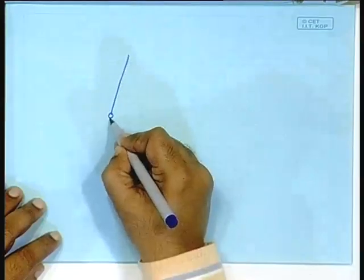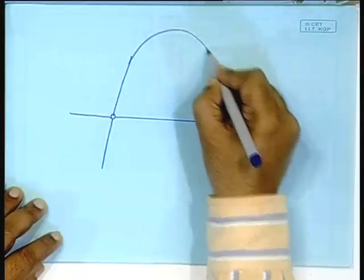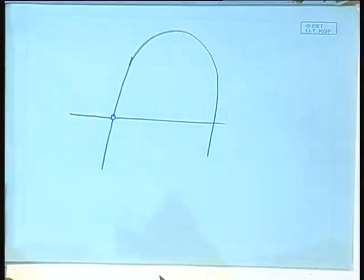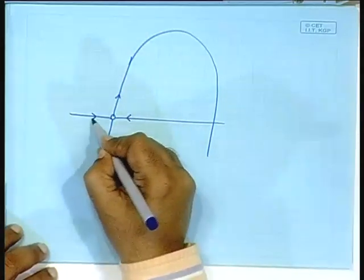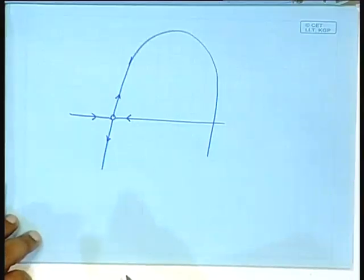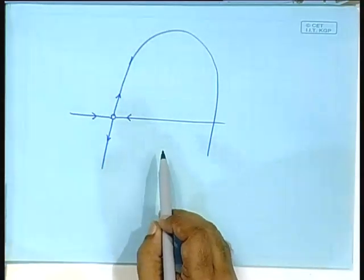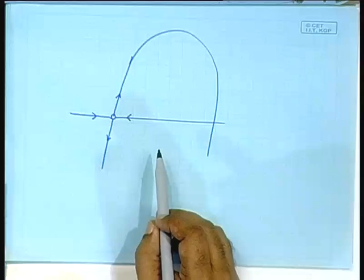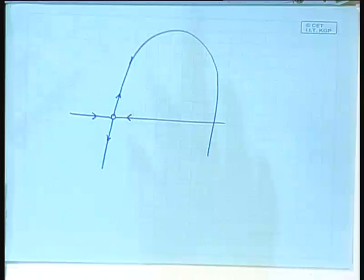But then, can this happen — can the stable and unstable manifolds cross each other? There is no concrete logic that would prevent this. There is no concrete logic you can provide that will say that the stable and unstable manifolds cannot cross — they can cross.